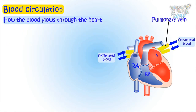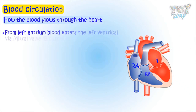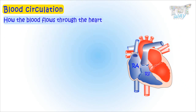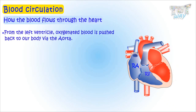From the left atrium, blood enters the left ventricle via the mitral valve. From the left ventricle, the oxygenated blood is pushed back to each part of the body via the aorta.